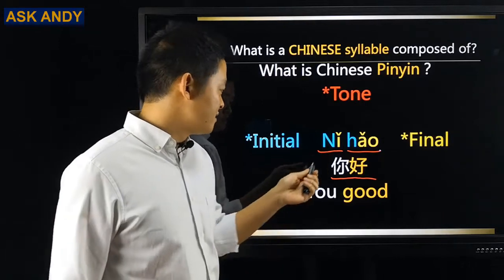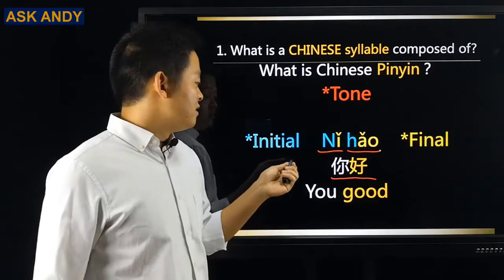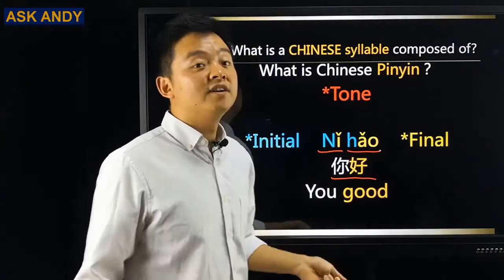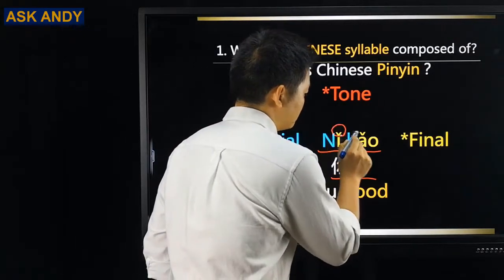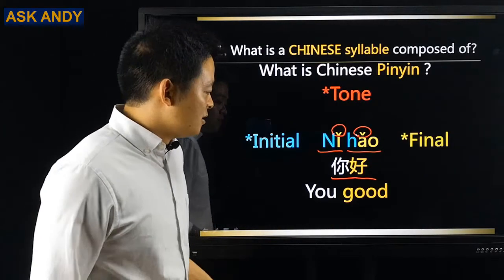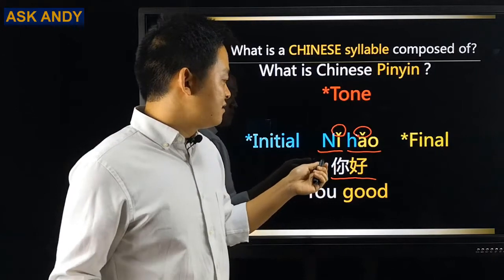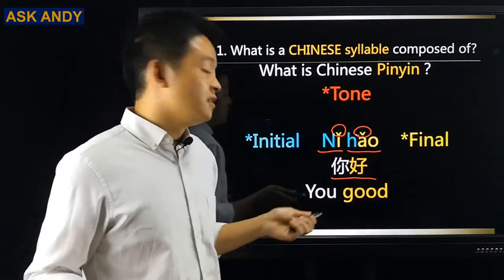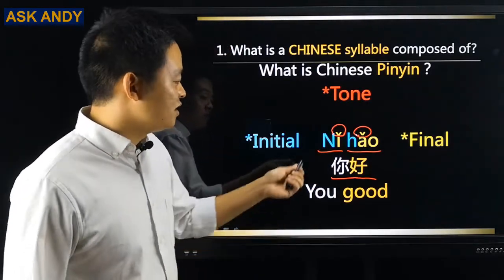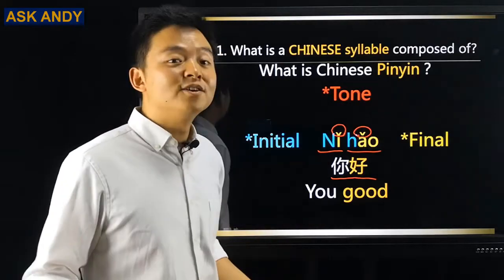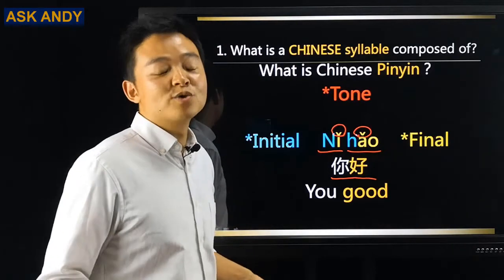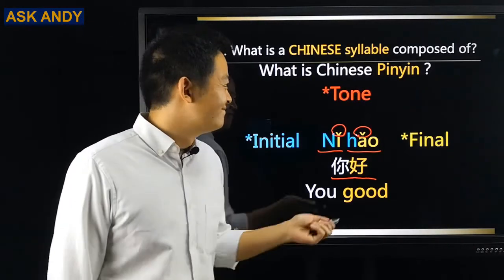I made the components in different colors. N and H in blue — these two are initials. I, A, O in yellow — they are finals. And these two are tones. What do these two syllables mean? The characters are nǐ hǎo — the syllables tell us how to read them. It literally means 'you good,' but it means 'hello' in Chinese. Chinese people are really friendly — we say 'you good' to greet each other!